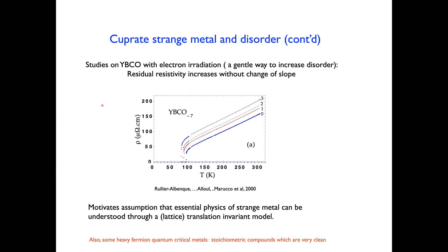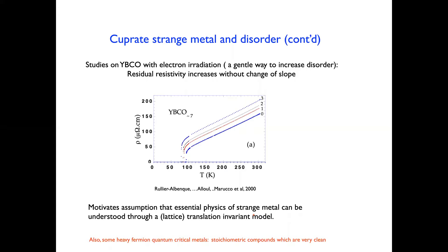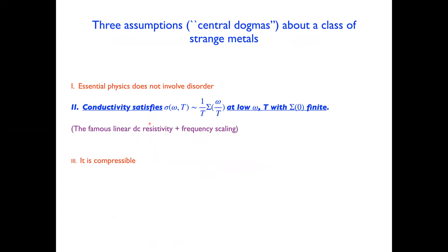These observations emphasize that disorder is not critical in understanding the physics of these metals, and that we can understand the essential physics by building a lattice-translation-invariant model. Let me now turn to the second assumption — that the conductivity satisfies scaling. The DC part of this is the linear resistivity. The question is to what extent there is omega-over-T scaling in the frequency-dependent transport.